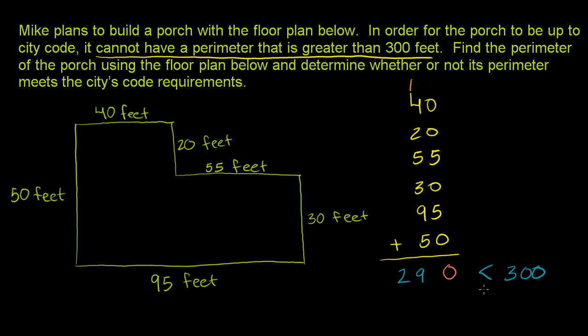It could have even been equal to 300 feet. So we could have even said it just has to be less than or equal to 300 feet, and we meet our city code. So he can go ahead and build this porch.